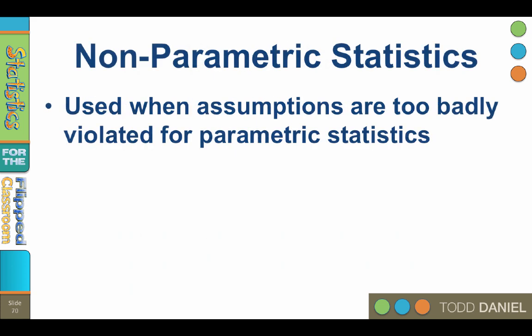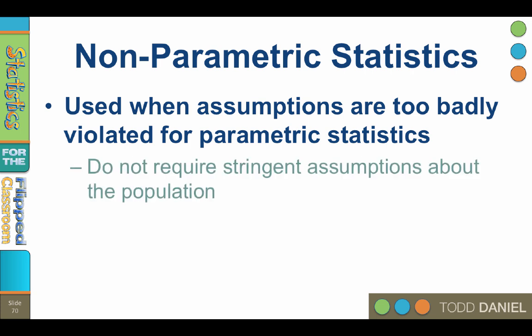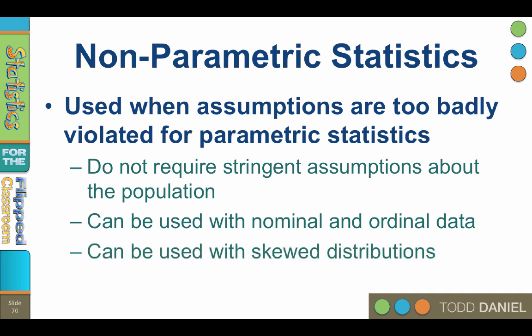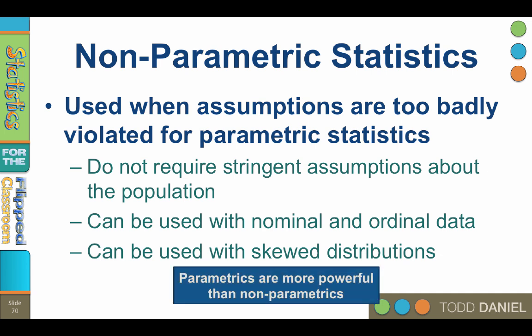But what do you do if you can't use parametric tests, or if you don't want to, or if your advisor tells you that you can't? Good news — you have options. You can still use non-parametric statistics. Non-parametric statistics are used when the assumptions are too badly violated to use parametric statistics. They do not require the stringent assumptions about the population, can be used with nominal and ordinal data — and this is their real strength — and can also be used with highly skewed distributions. However, parametric statistics are more powerful than non-parametrics, meaning you are more likely to find an effect that actually exists and avoid a type 2 error. Also, non-parametric statistics cannot be used with complex research designs, and that can be pretty limiting.